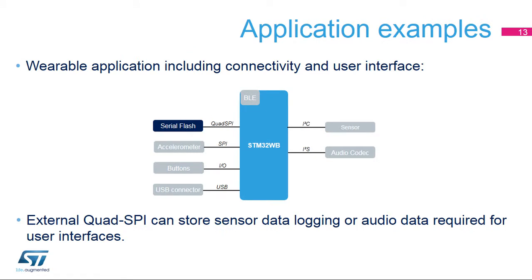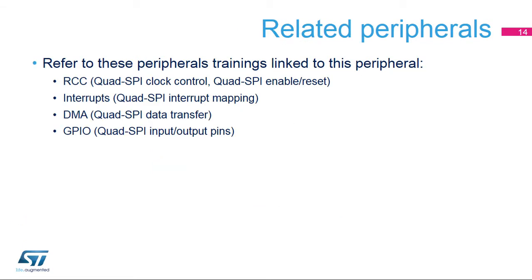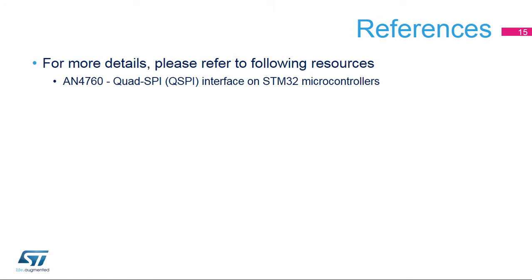Wearable applications require low-power management functions together with sensor data logging and possible audio interface. This can be achieved using the Quad SPI interface to store data logs for sensors in an external flash memory. Additional audio data for ringtones or audio message generation can also benefit from the large space offered by an external flash memory. The low pin count needed to drive such devices allows for a highly optimized system integration. You can refer to the peripherals training slides related to RCC, interrupts, DMA, and GPIO for additional information. For more details, please refer to the following documentation available on our website.